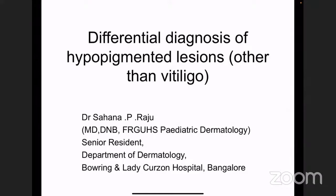Most of us know about vitiligo and have a rough idea about what it is. But before stamping the diagnosis on any patient as vitiligo, we need to make sure of the diagnosis because of the social stigma associated with vitiligo. Today I'll be dealing with the other hypopigmented lesions which occur commonly.